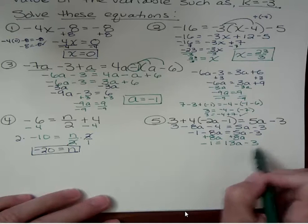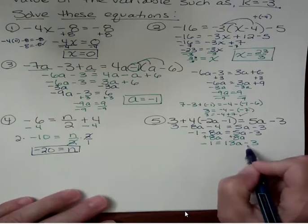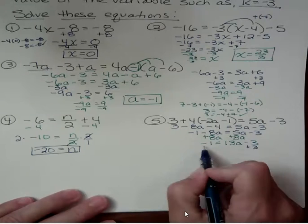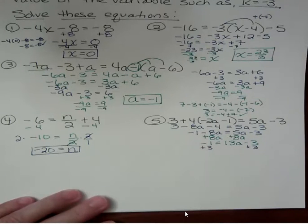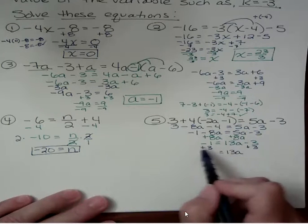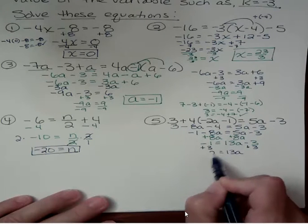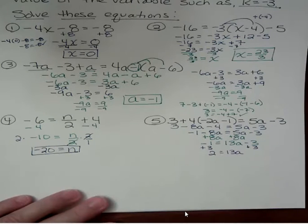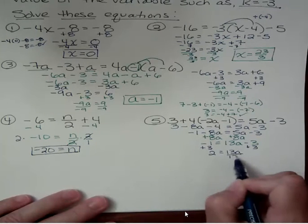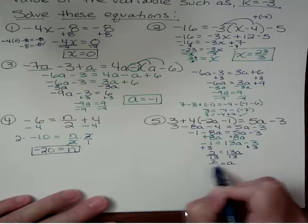Now I want to get rid of the minus 3 or subtract 3 by adding, because that's the opposite. I want those terms to go away. And these are additive inverses. They drop out. And that leaves 13a. And over here, negative 1 and positive 3, I have more positives by 2. So I get 2. And divide both sides by 13. And I get a equals 2 thirteenths.